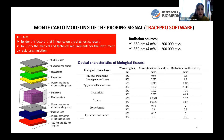We took into account the difference in anatomical features of female and male, and set four different thicknesses of hypodermis, different thicknesses of mucous membrane, and different sizes of the maxillary sinus for female and male. All optical coefficients were taken from the literature.